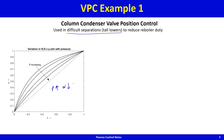As alpha goes down, separation difficulty goes up, which means for the same separation, reboiler duty will go up. So if you increase the pressure, for the same separation you will have to consume more reboiler steam. This can be particularly costly for difficult separations with relative volatilities on the order of 1.1–1.3.